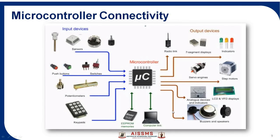This is the microcontroller connectivity. The input devices, based on real-life applications, include switches, push buttons, keypads, and sensors. We provide input to the microcontroller through these devices, and the microcontroller is generally placed in memory or a computer link. Output devices include radio link indicators, analog result displays, LCD displays, buzzers, and speakers. In this way, we supply the input, the microcontroller performs the operation, and displays the output.